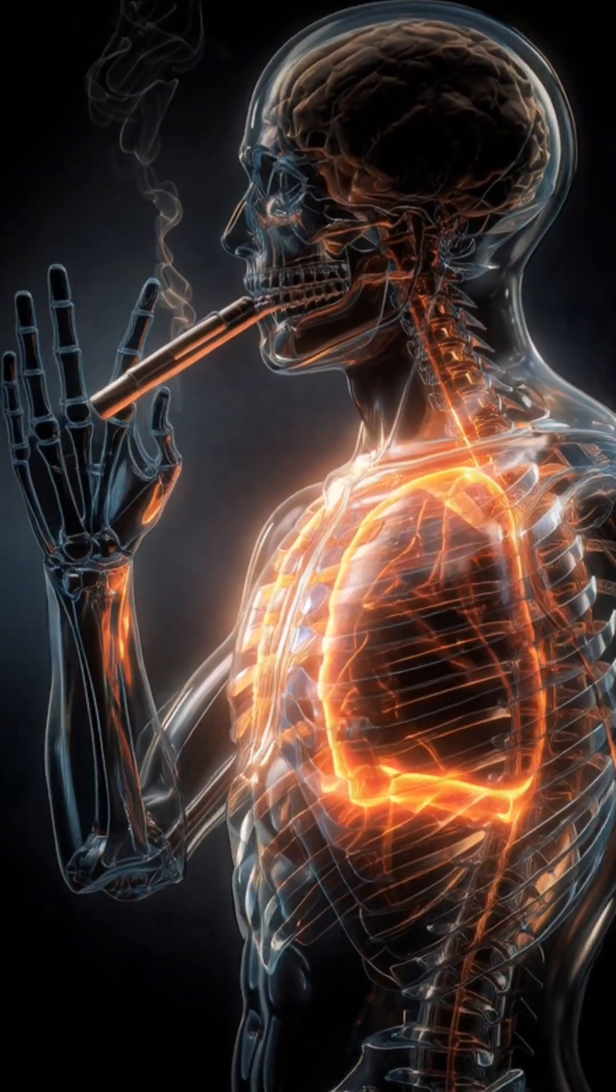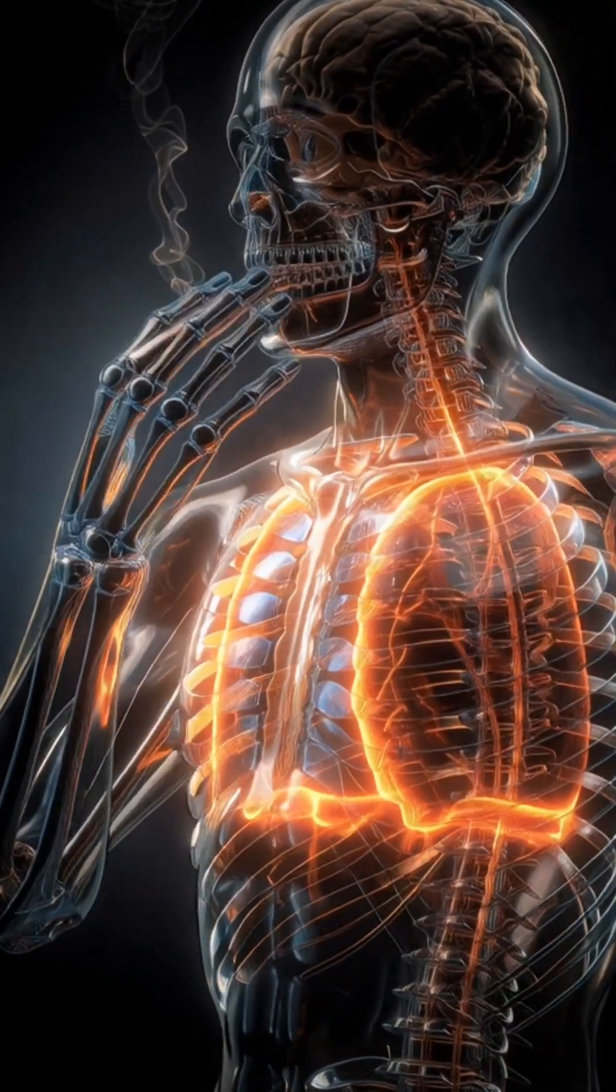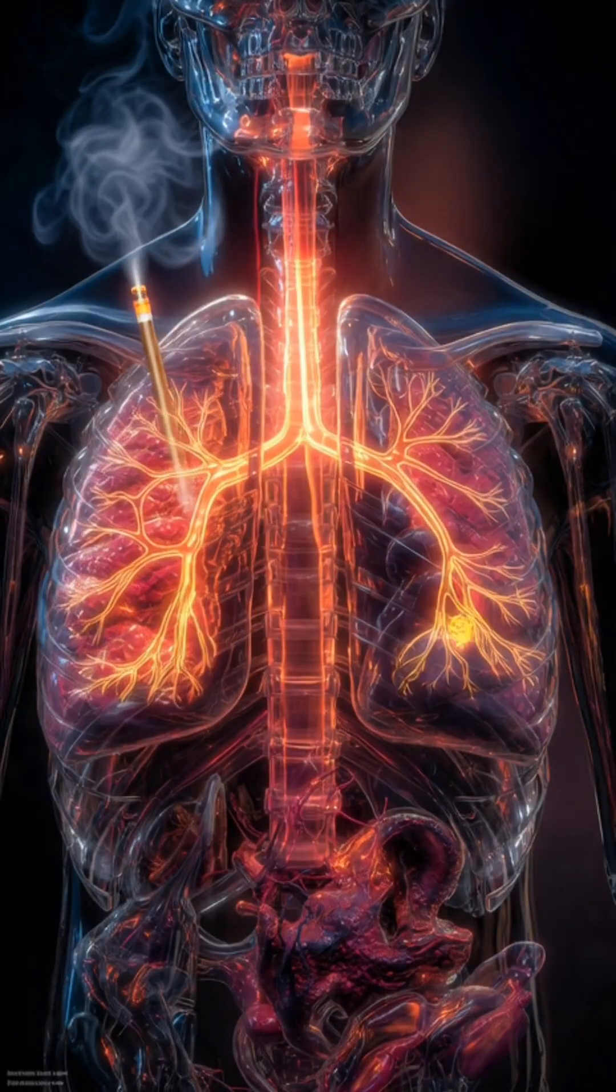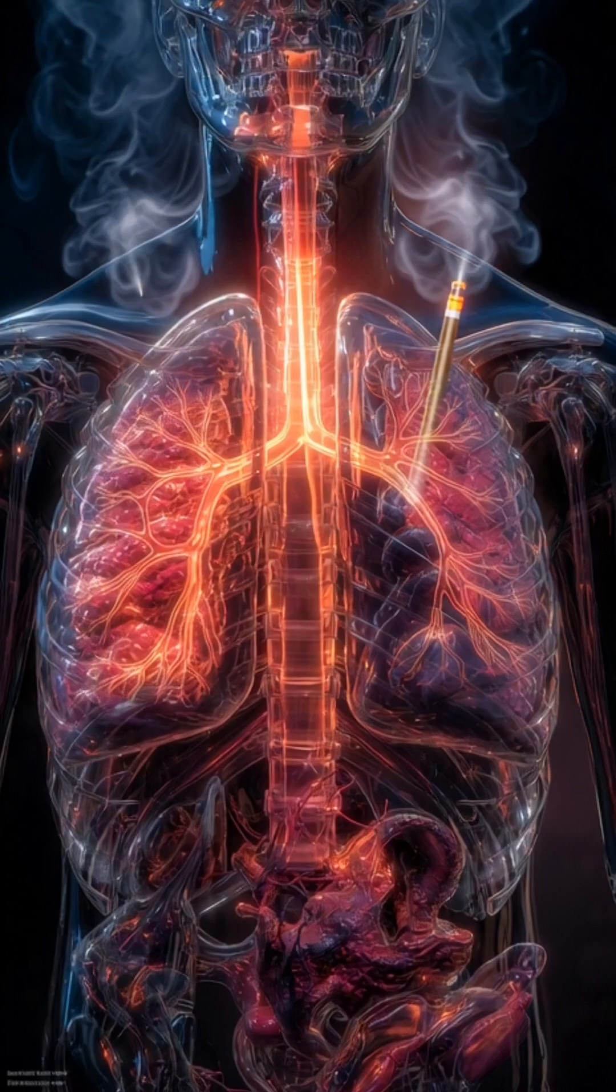As the smoke travels through your transparent airway, tar sticks to the lung walls, blocking oxygen and slowly turning them darker.